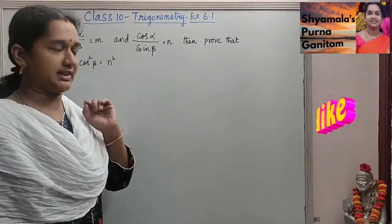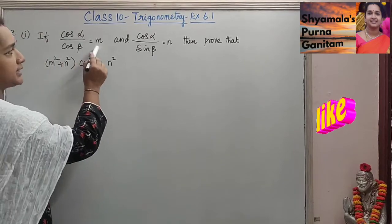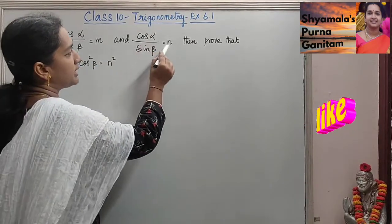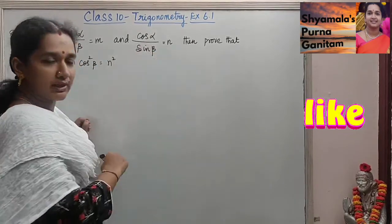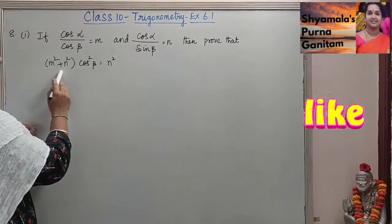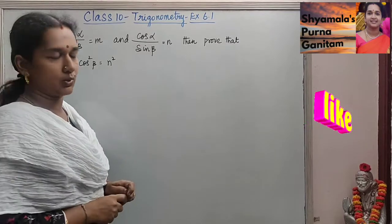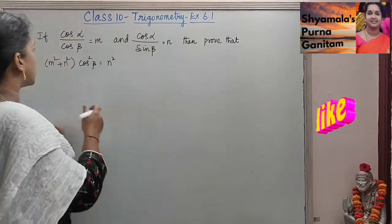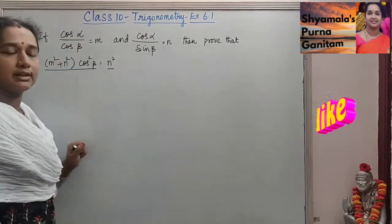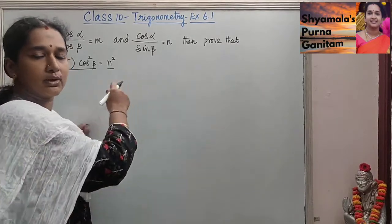8th sum, subdivision 1: if cos α by cos β is equal to m and cos α by sin β is equal to n, then prove that m squared plus n squared cos squared β is equal to n squared. We will take the LHS and prove that it equals RHS, that is n squared.